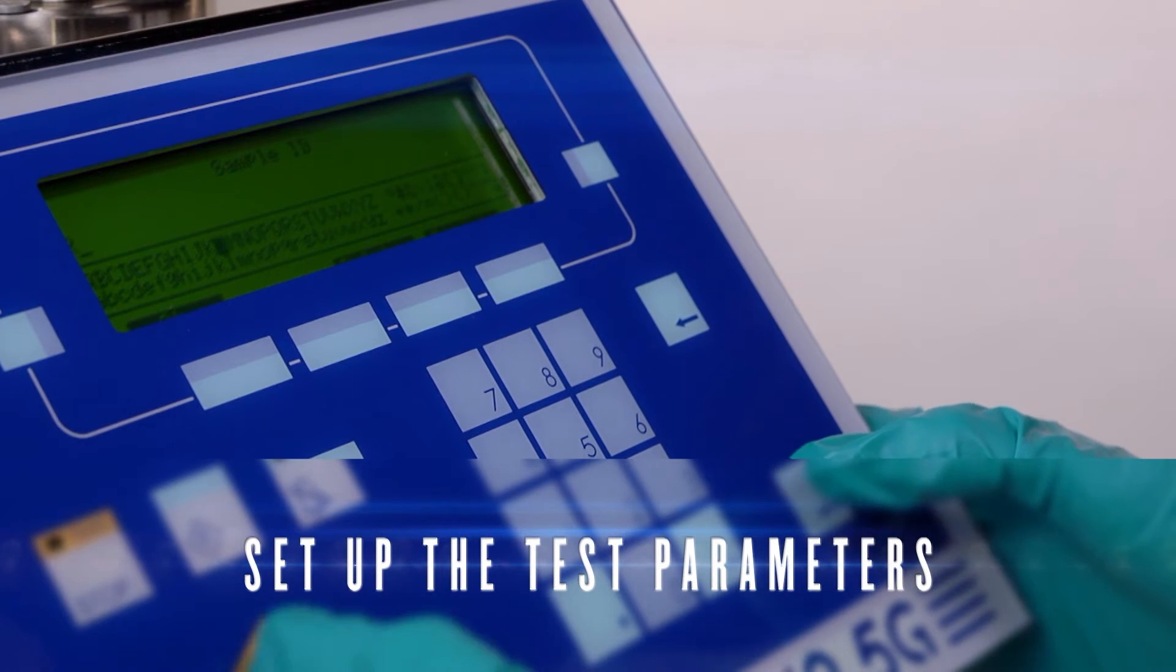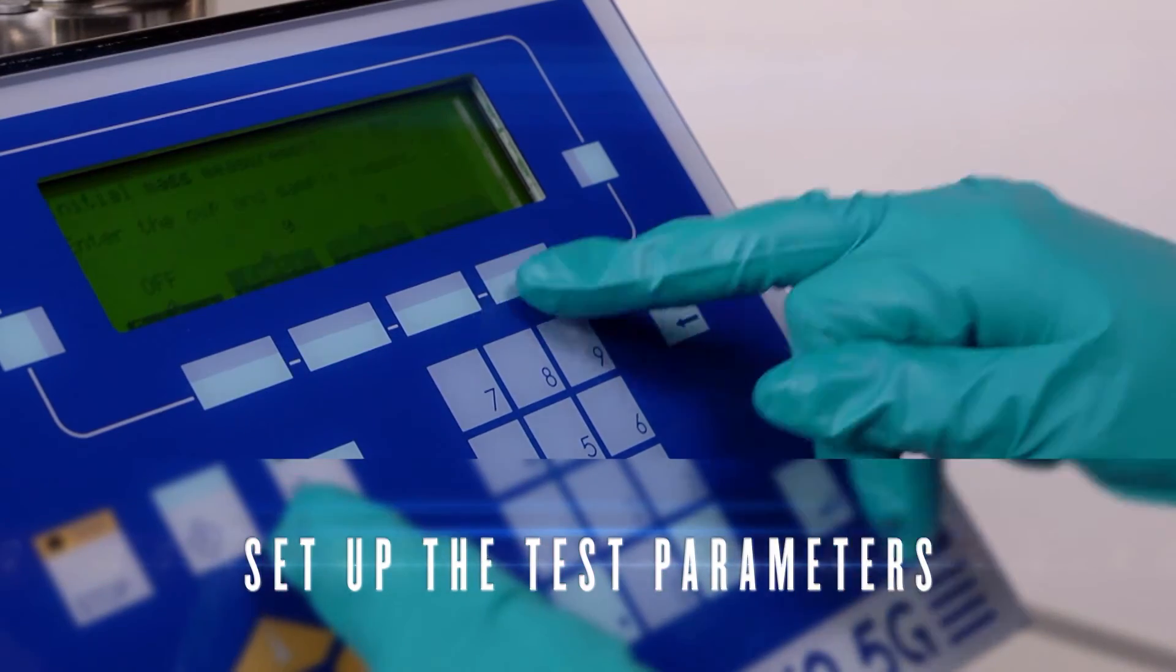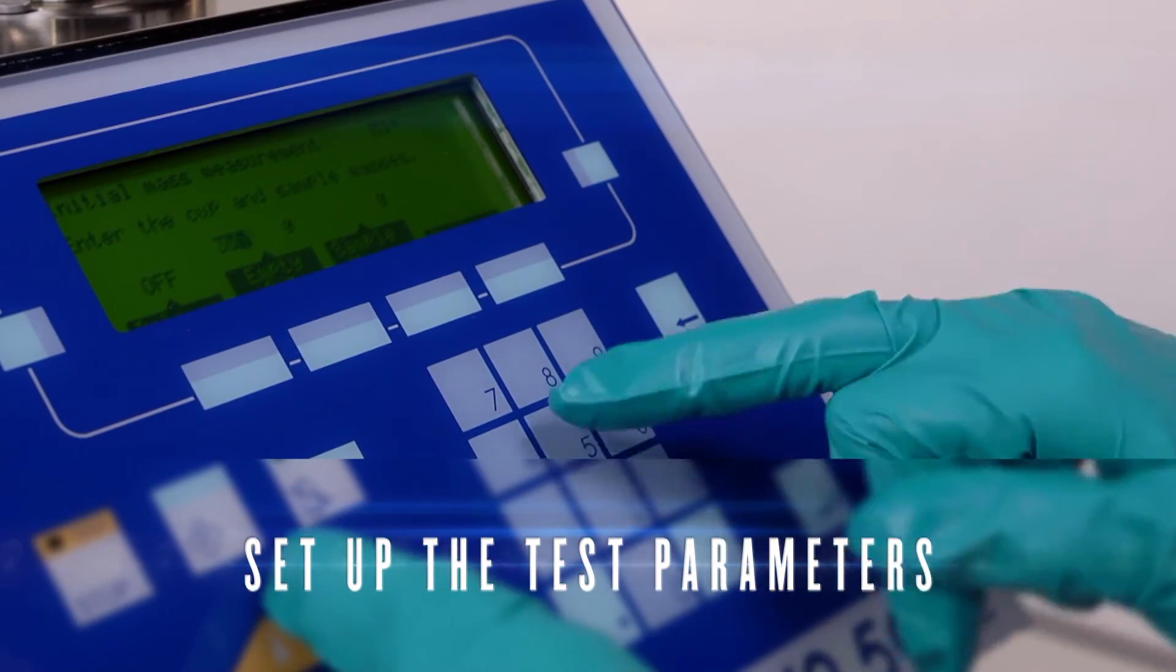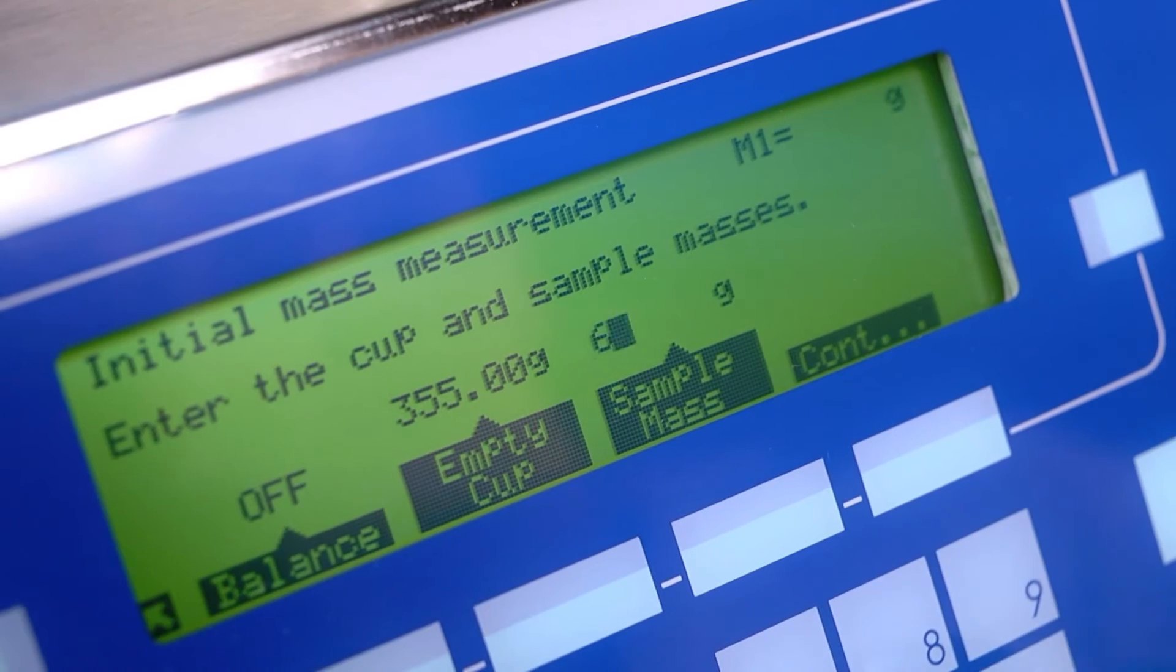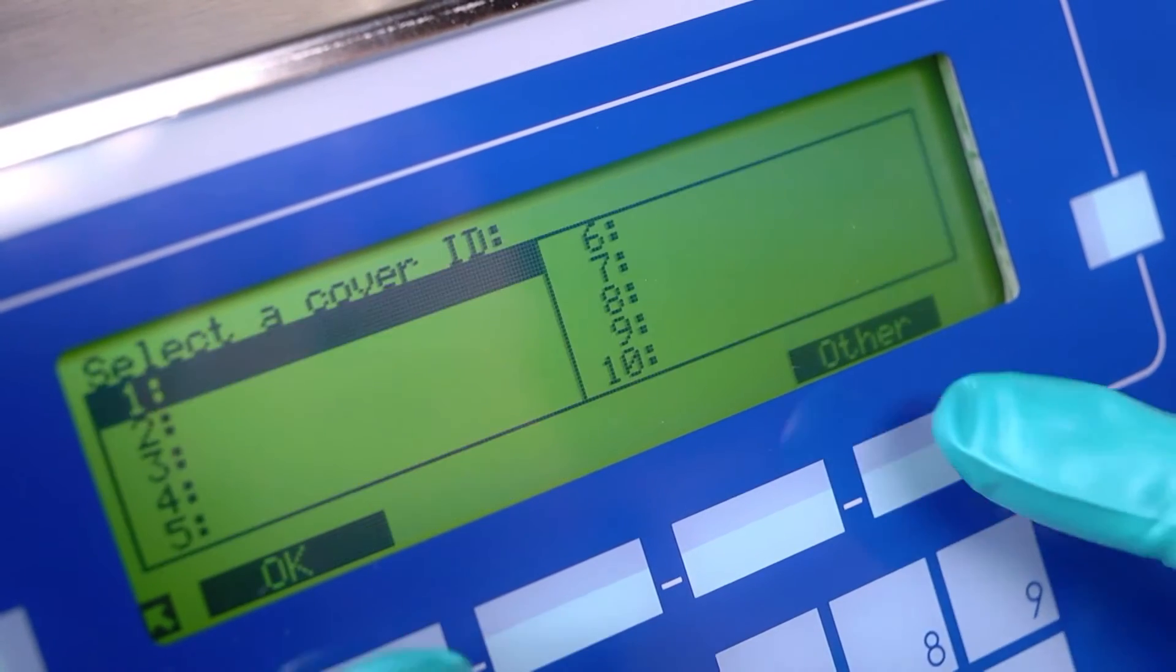Set up the test method as well as key parameters such as sample ID, initial weight, operator name, then press the run button to start the test.